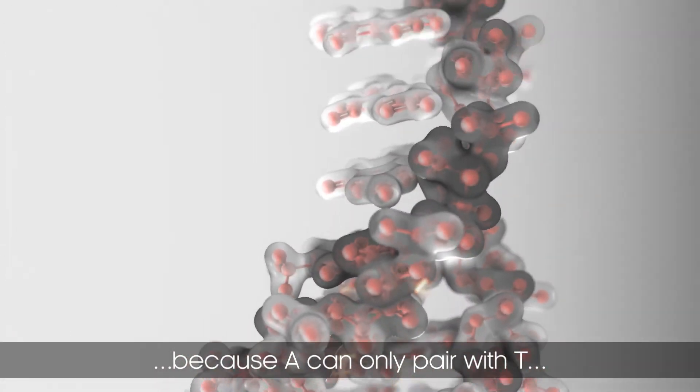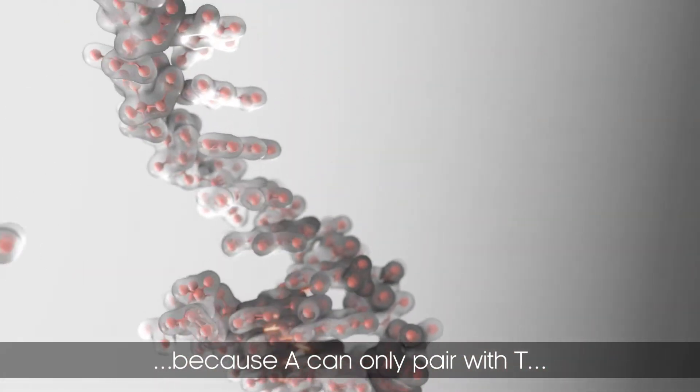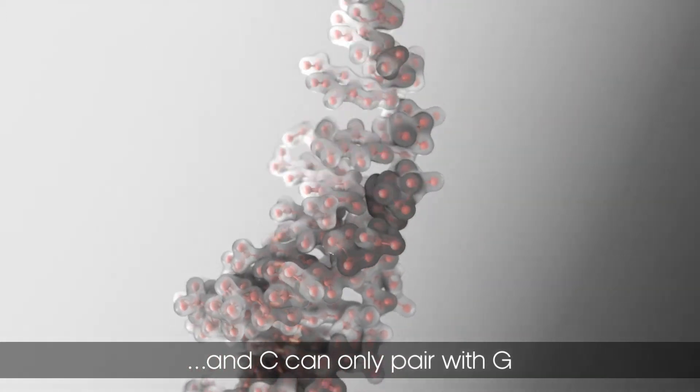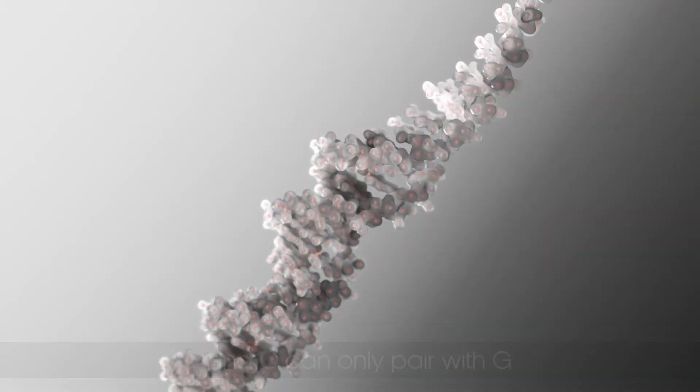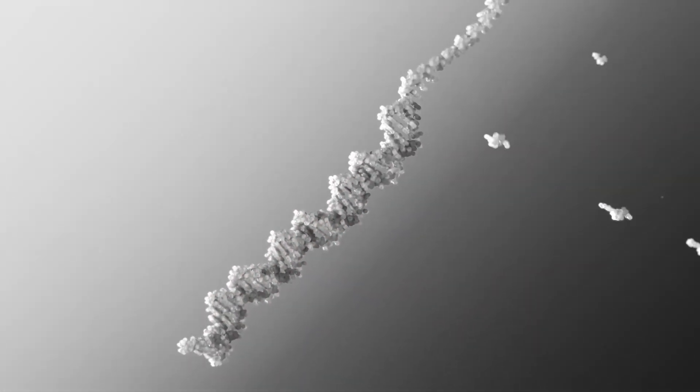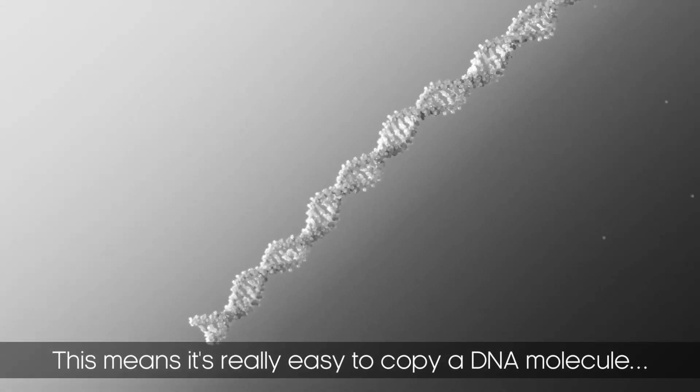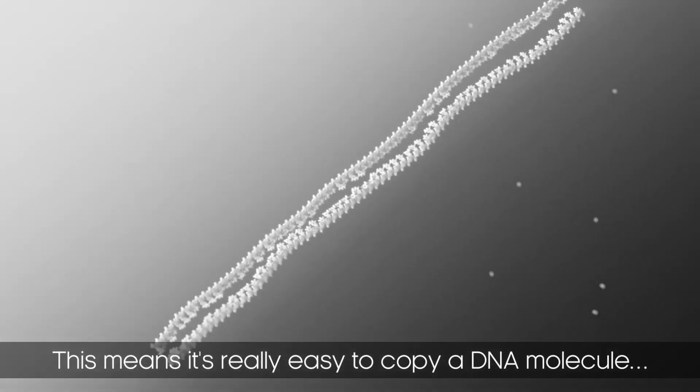Because A can only pair with T, and C can only pair with G. This means it's really easy to copy a DNA molecule.